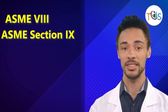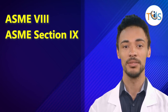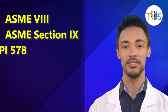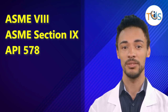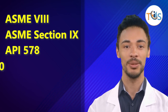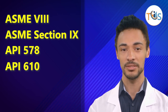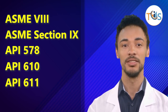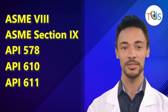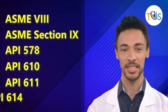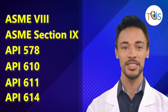Further standards include ASME Section 9 Welding and Brazing Qualifications, API 578 Material Verification Program (PMI), API Standard 610 Centrifugal Pumps, API Standard 611 General Purpose Steam Turbine, and API Standard 614 Lubrication and Shaft Sealing Standard.